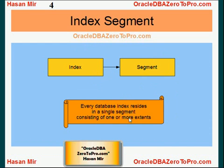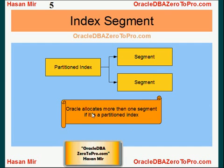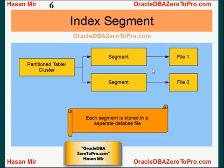Every database index resides in a single segment consisting of one or more extents — we already know that a segment consists of one or more extents. You can also partition indexes. Oracle allocates more than one segment if it's a partitioned index. Why would you partition an index? Same reason as partitioning a table: if it's a big index, you don't want Oracle doing lots of reads on it, so you put that index in two segments and store each segment in a different file. That way Oracle can read the whole index in half the time, because two hard disks are being read at the same time. Each segment is stored in a separate database file.